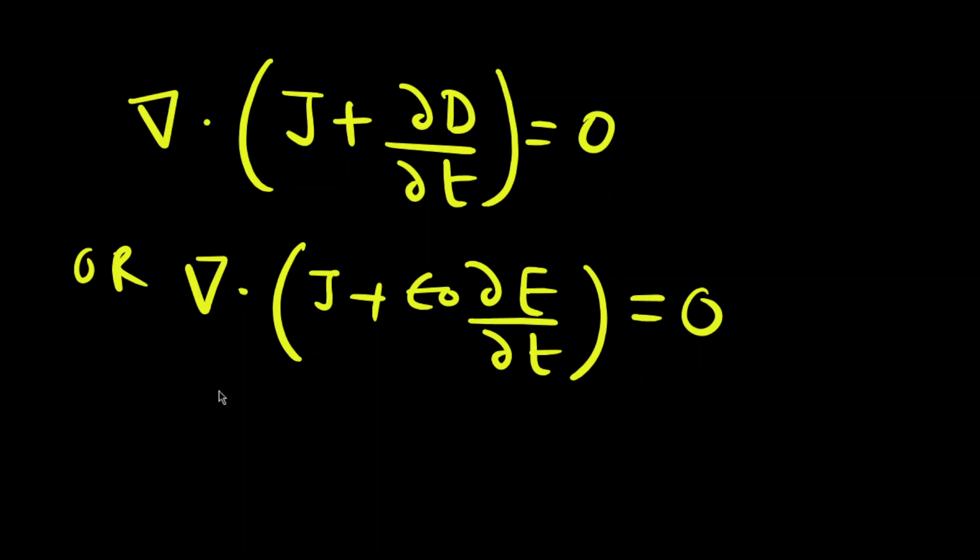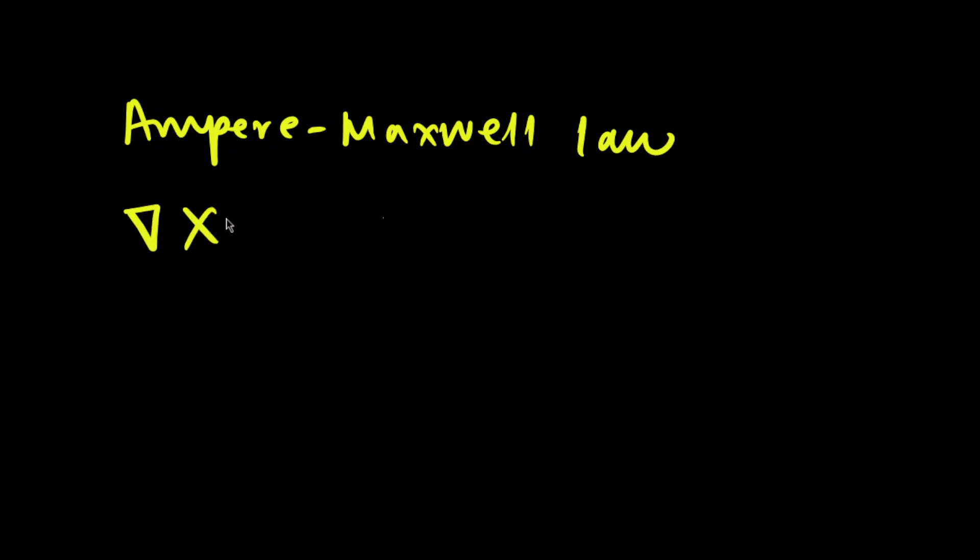So from now this reads Maxwell's law, which reads like ∇×B = μ₀J + μ₀ε₀∂E/∂t.